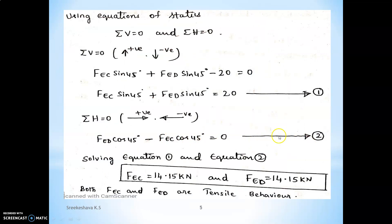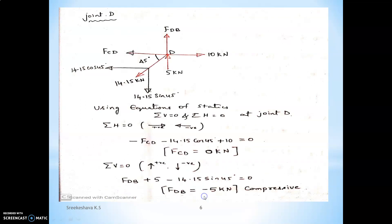These two equations are simultaneous equations. Solving them using a calculator, we get F_EC equals 14.15 kN and F_ED equals 14.15 kN. Both are positive values. Hence, if you get a positive value, the nature of the force is tensile; if negative, it is compressive. In this case, both forces are positive, so both possess tensile behavior.